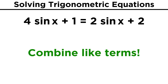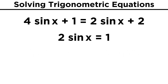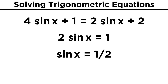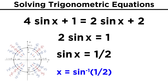First we need to combine like terms, so let's subtract two sine x, as well as one. That gives us two sine x equals one. Divide by two, and sine x equals one half. Now to solve for x, we can definitely take the inverse sine of one half, or we can picture the unit circle and recall that pi over six has a sine value of one half.